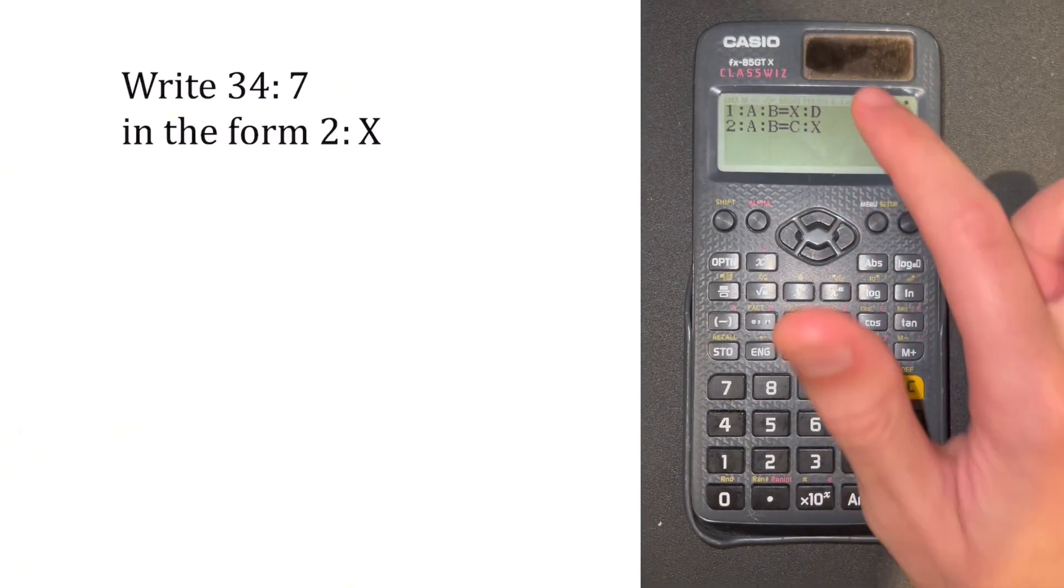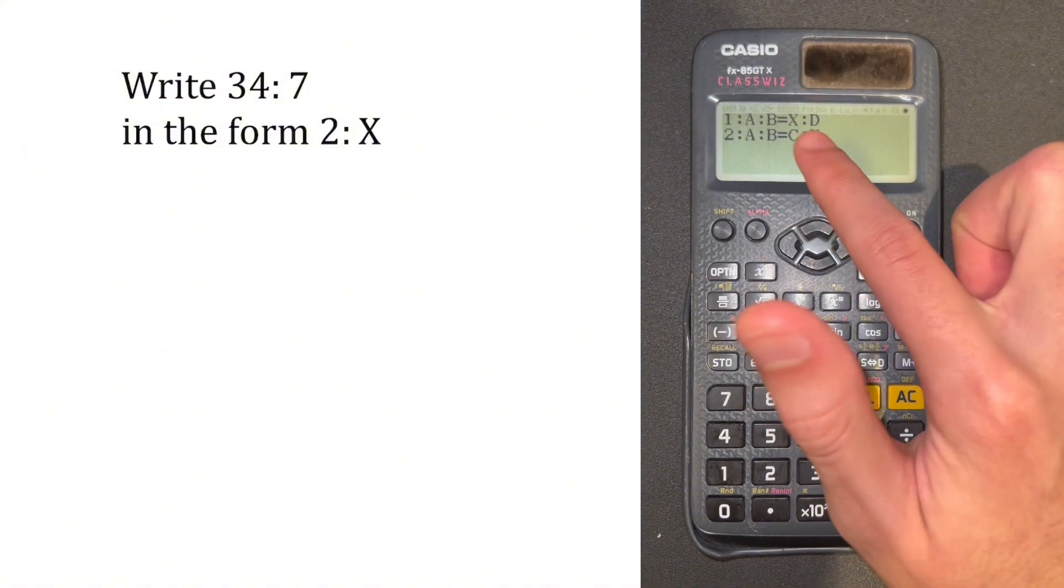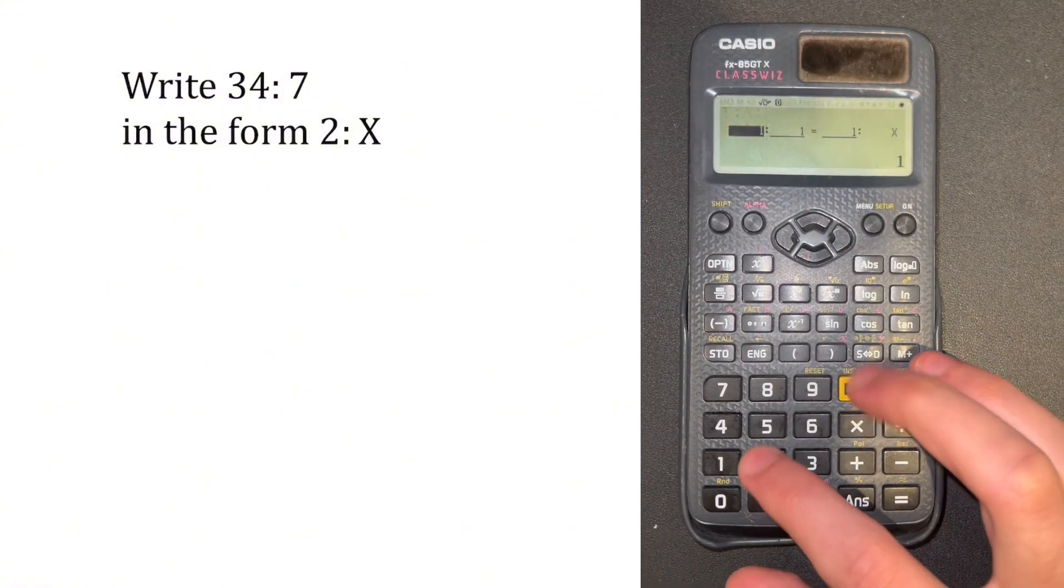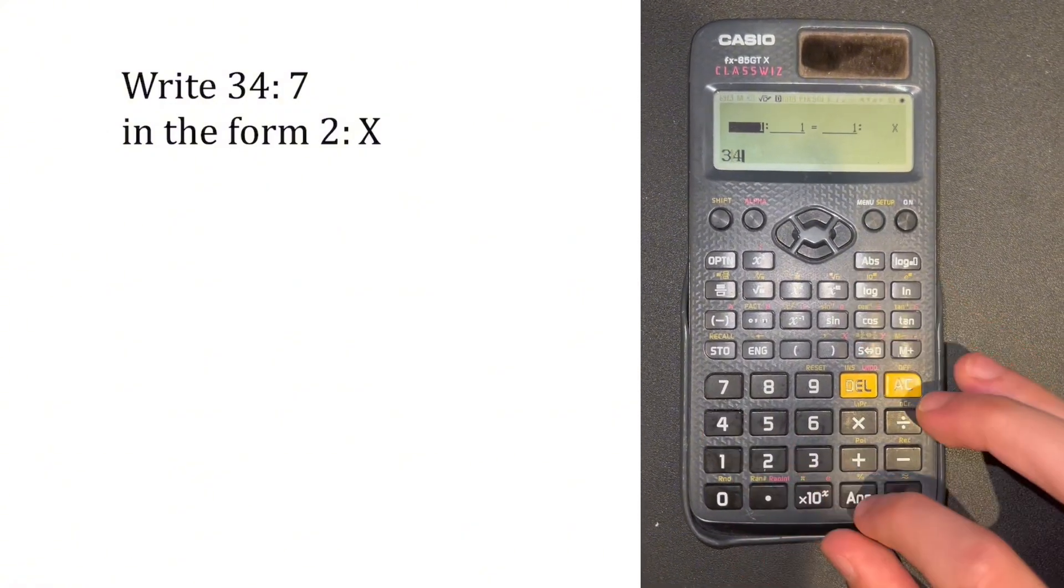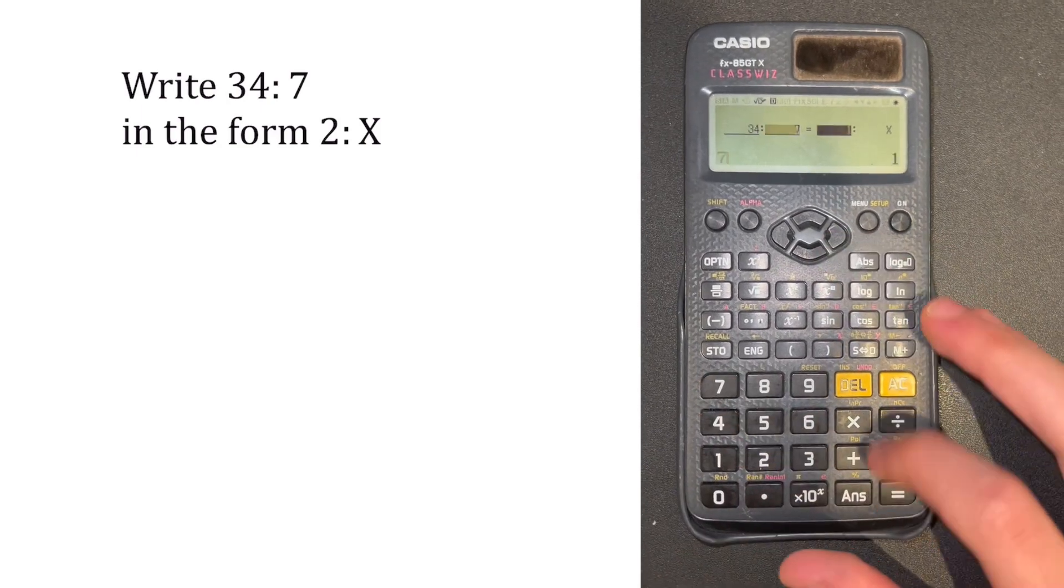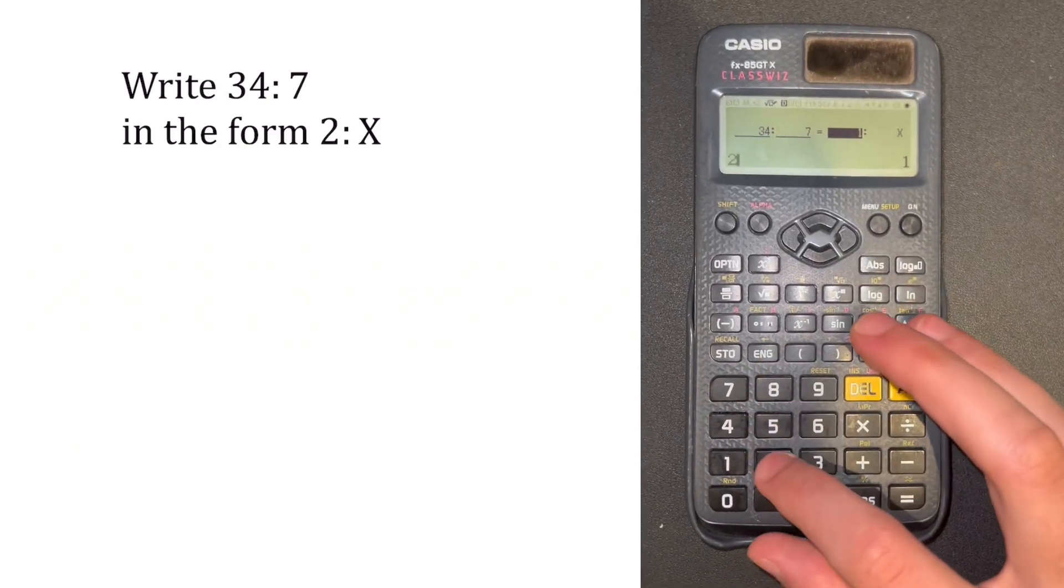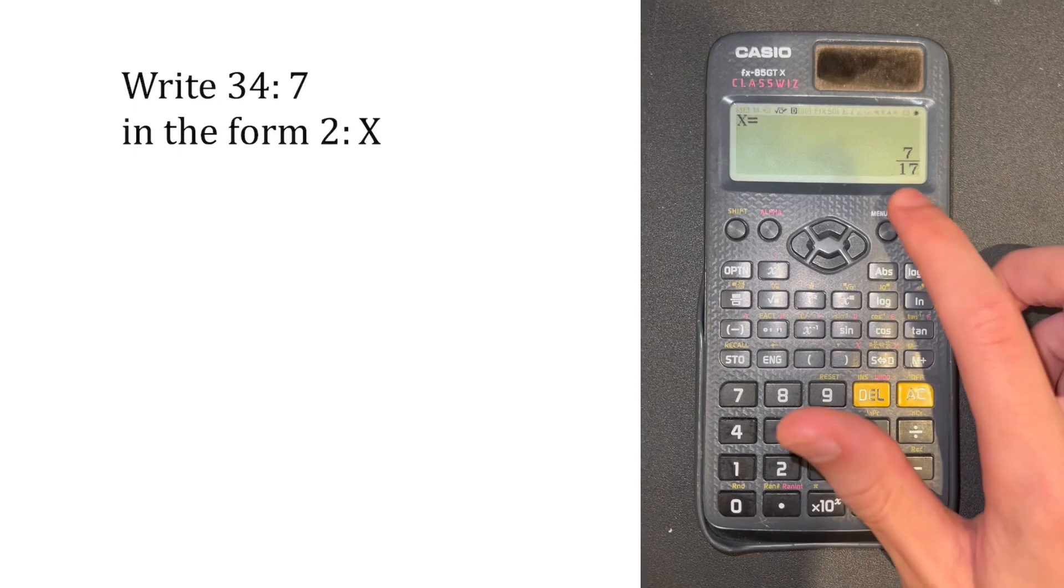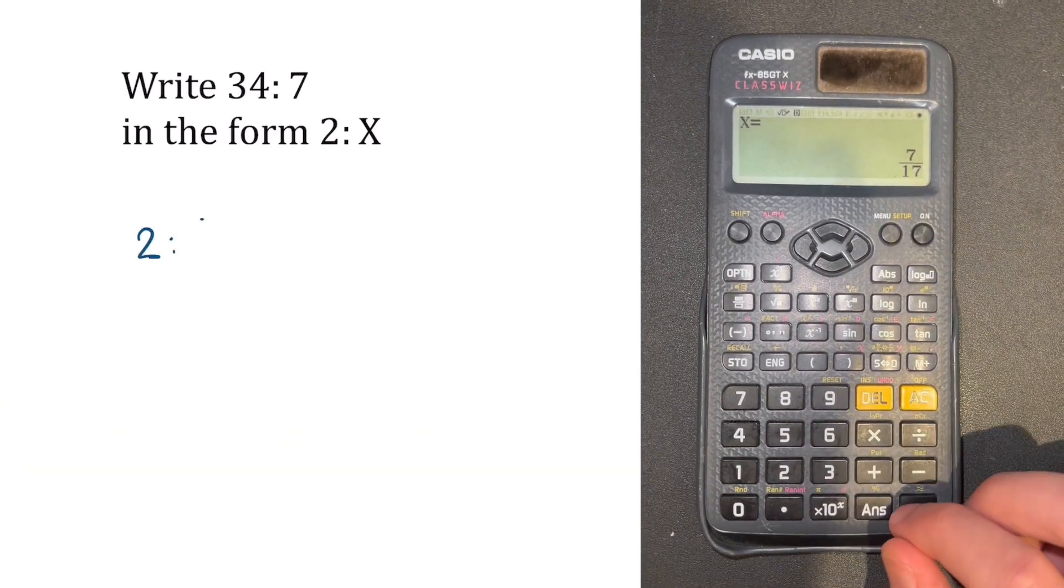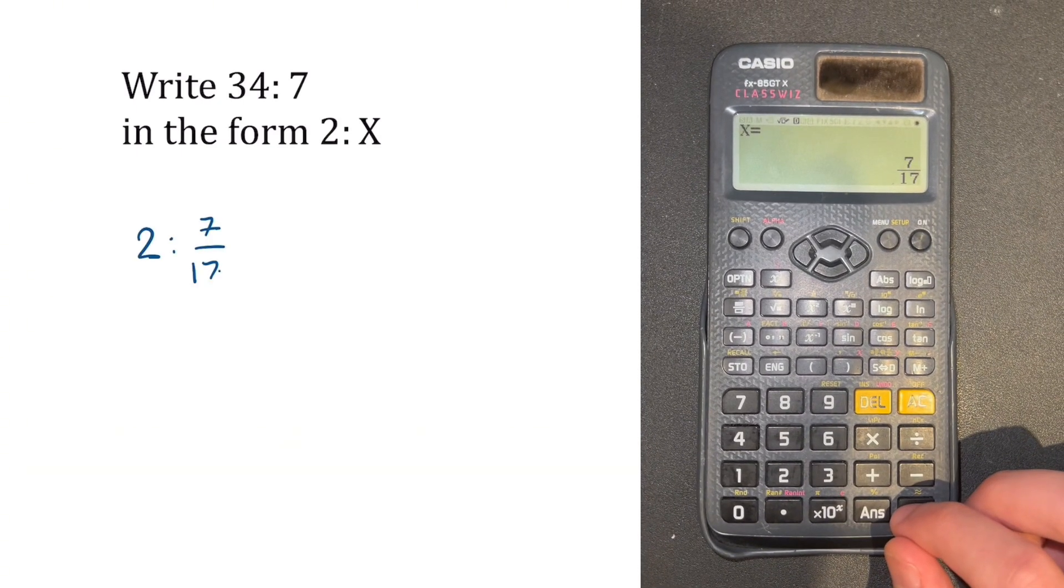Now we want our ratio in the form C to X, where X is the thing we want to find. So we press number 2. Now we just type in our ratio, which is 34 to 7 equals 2 to X, because that's how we want it. And then it gives us X, which is 7 over 17. So our answer is 2 to 7 over 17.